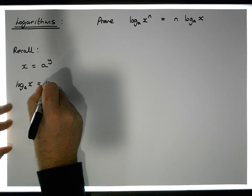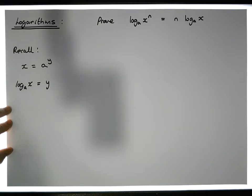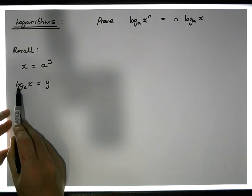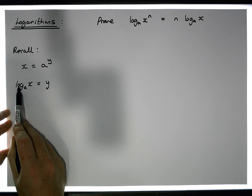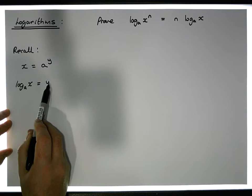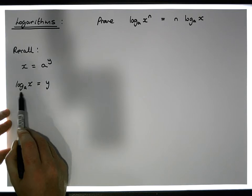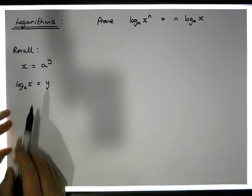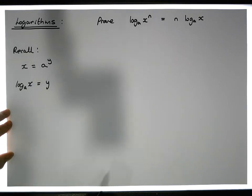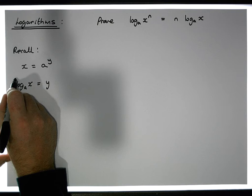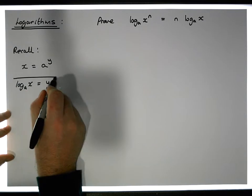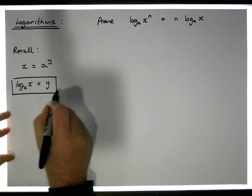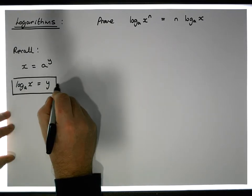So in logarithmic notation, the log of x to the base a is equal to y — what that's saying is that a to the power of y is equal to x. This is really important and we're going to use this definition to help us with the proof.